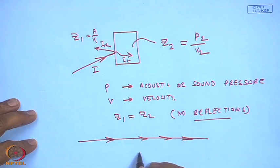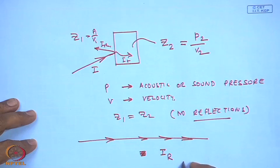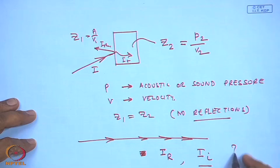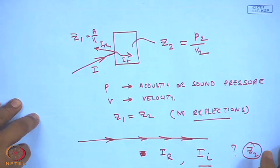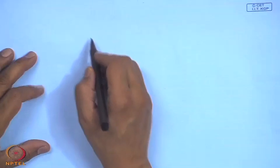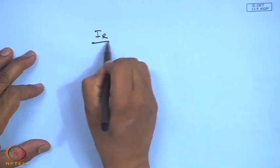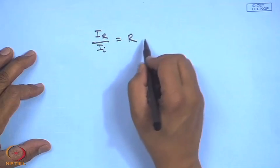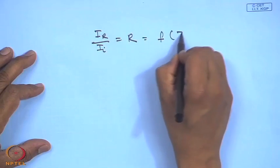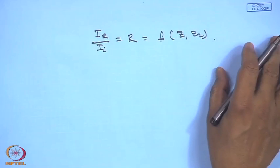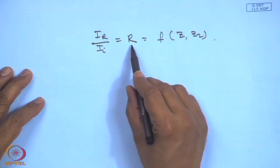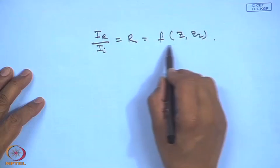Depending on the intensity of the reflected wave versus the incident wave, we can find clues about what Z2 of the material is. If there is a difference in impedance, the reflection coefficient Ir/Ii will vary as a function of Z1 and Z2. From acoustics, one can find the relation between the reflection coefficient and the transmission coefficient.